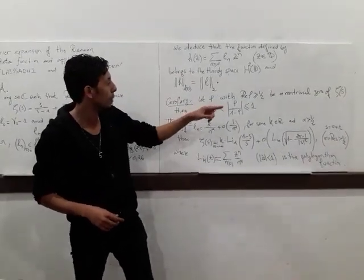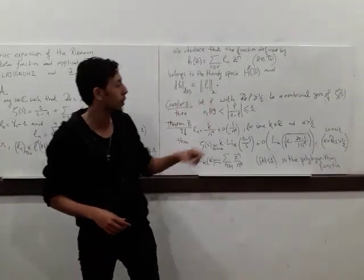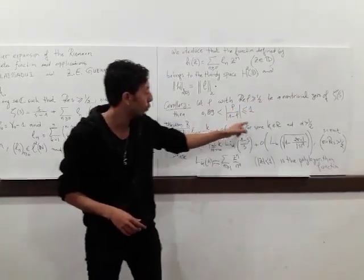For given non-trivial zeros of the Riemann Zeta Function, with real part larger than one-half, we have the following equality.